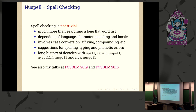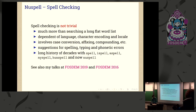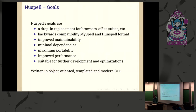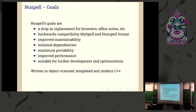For more on the history of spell checking you can check some talks I gave at FOSDEM earlier. The specific goals of Nuspell are to be a drop-in replacement for browsers, office suites, and all kinds of applications that use spell checking. It supports the MySpell and HunSpell library dictionary format. The big difference with other existing spell checkers is it's much faster, more maintainable, has fewer dependencies, and is more portable.